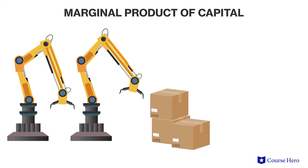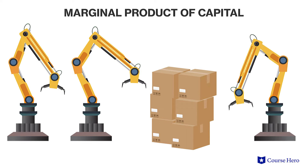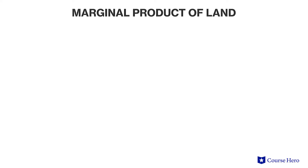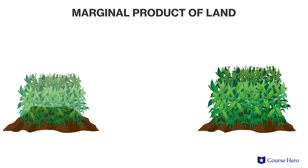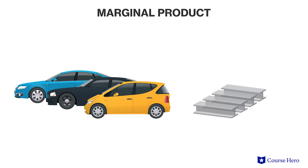The marginal product of capital is the additional output that results from adding one more unit of capital, and the marginal product of land is the additional output from adding one more unit of land. The marginal product is usually measured in physical units such as the number of cars or tons of steel. The key assumption of measuring marginal product is that it focuses on one input being increased while all the other inputs are held fixed.